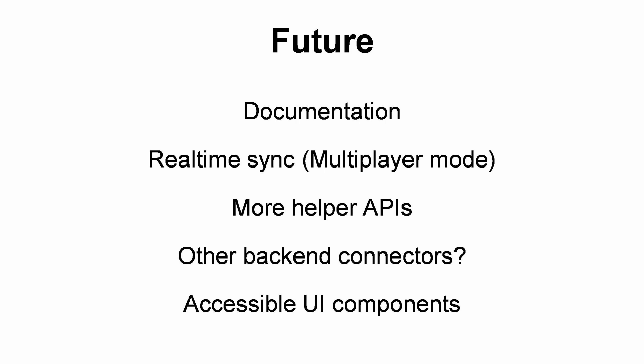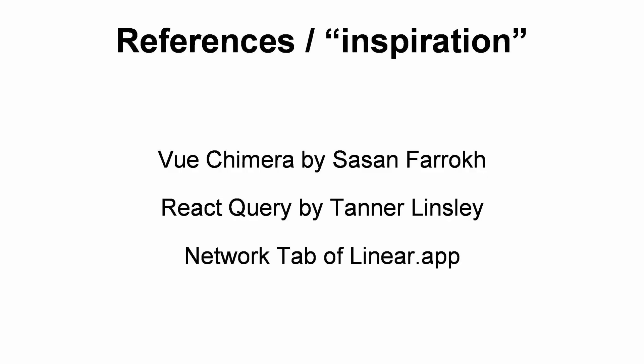All of this was obviously not my original idea. It was inspired by many awesome projects like Vue Query, React Query — which is now TanStack Query — and the network tab of Linear.app. When I discovered Linear.app it was very fast and I was very curious how it loaded so fast. I inspected its network tab and didn't find any requests — it's caching everything in IndexedDB. That's where I got the idea of caching data in IndexedDB.